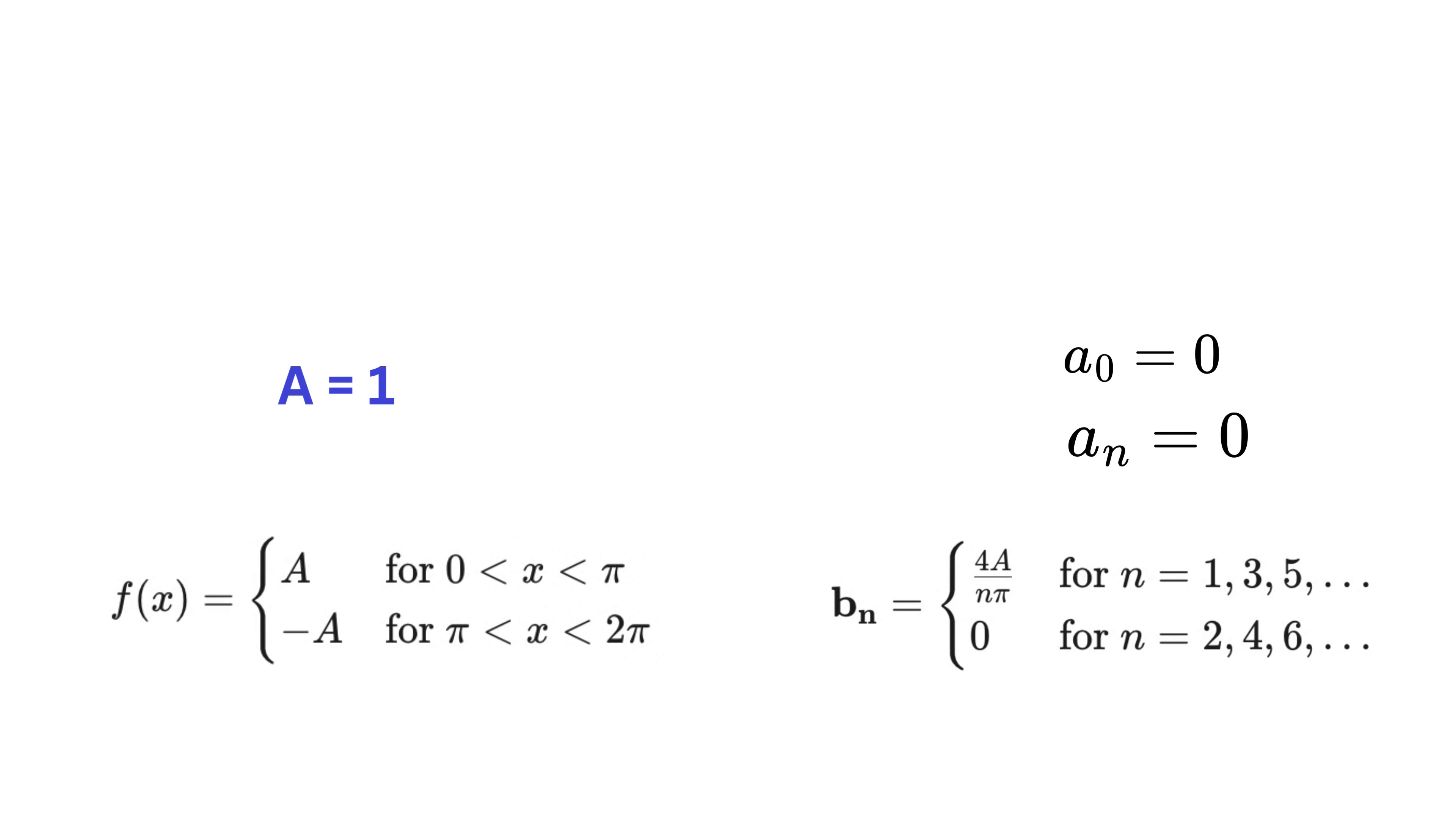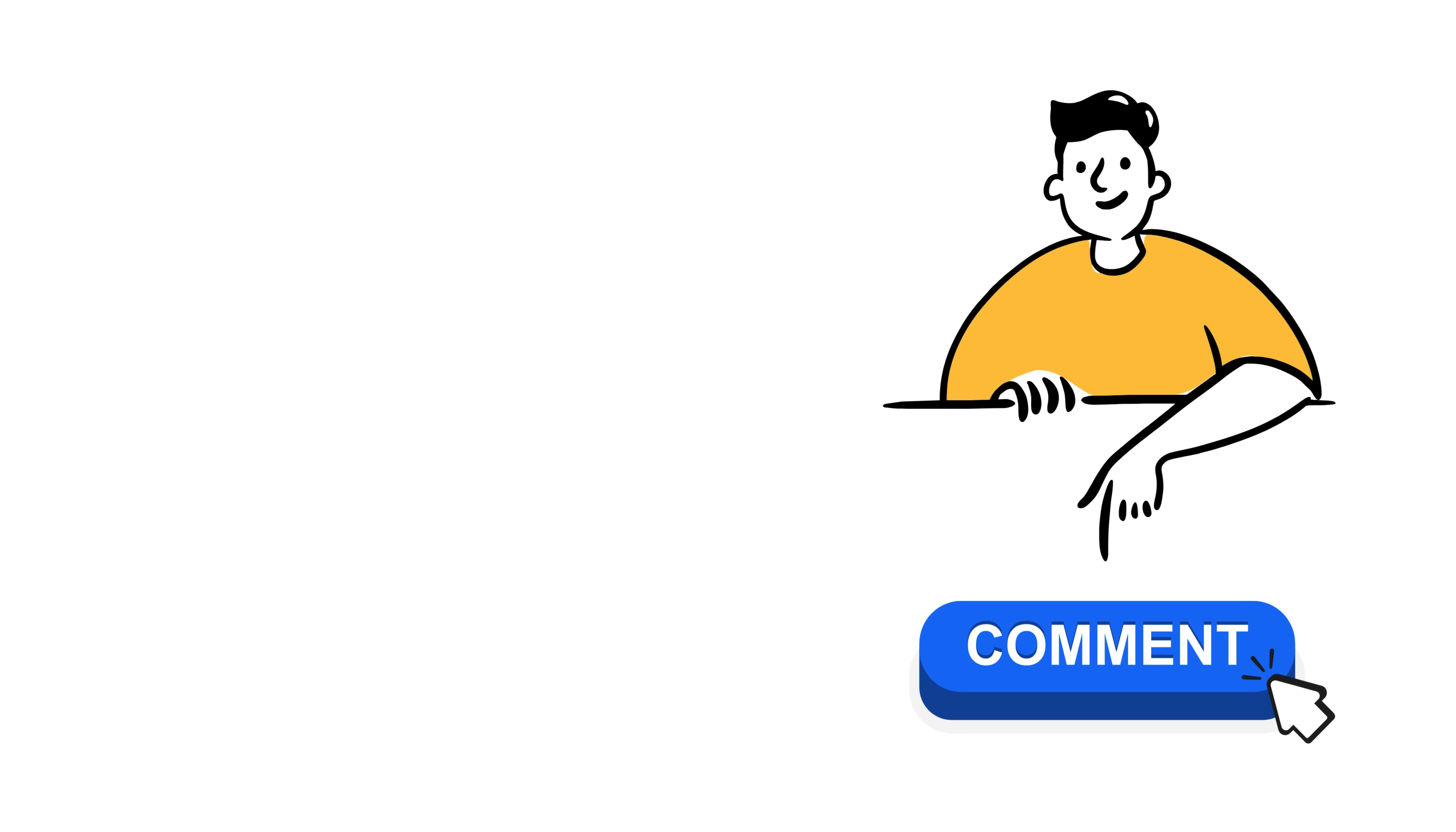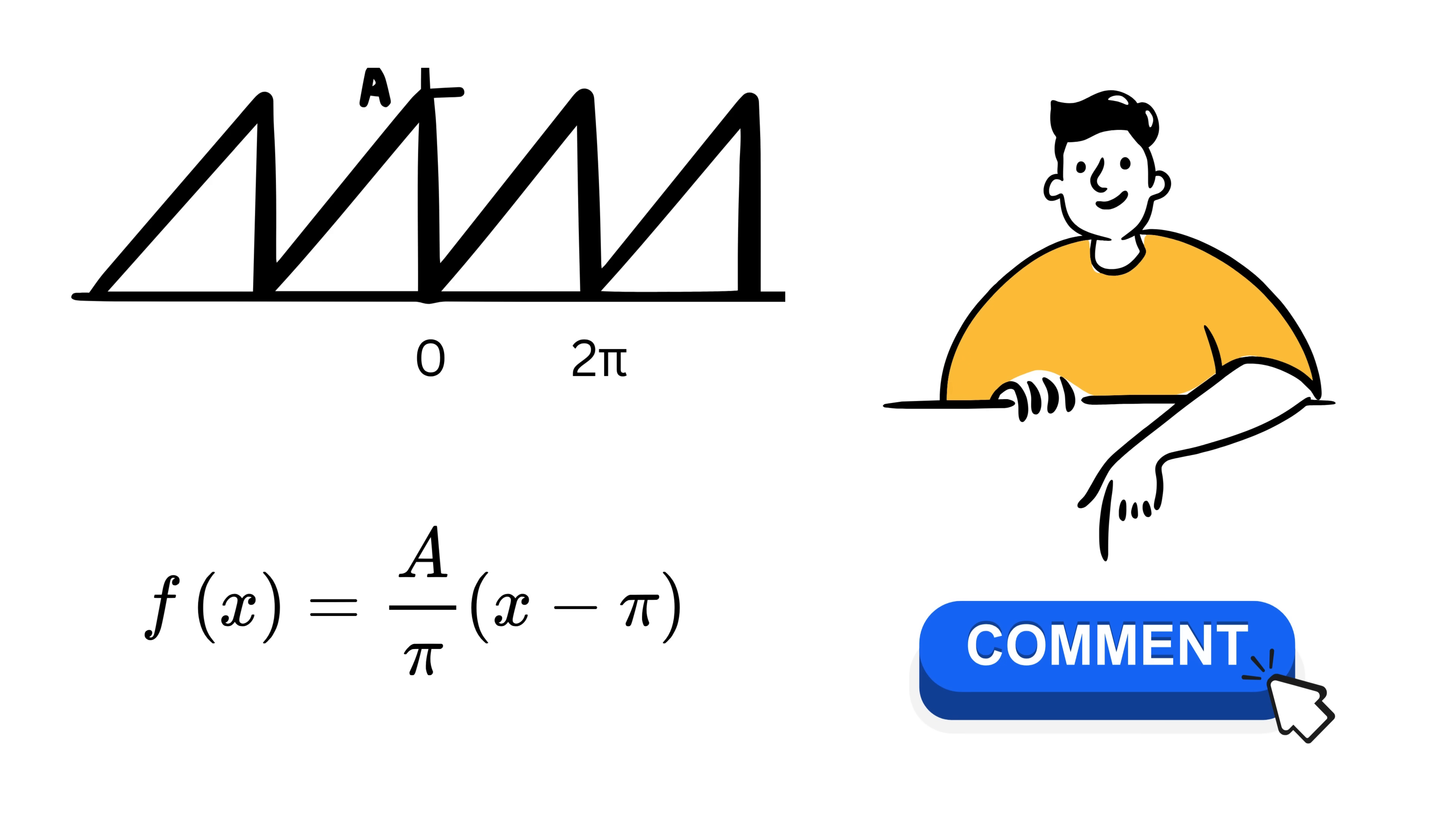So now if we take the amplitude A as 1, we get 4 over π times sum of 1 over n times sin(nx), or this, which is exactly the sum that I have already shown you visually, step by step. This is what the Fourier series is all about. Now let me know in the comments, what will be the Fourier series for this sawtooth-like wave? Note that we can represent this wave using the f(x) equals Ax over π for x, going from 0 to 2π.